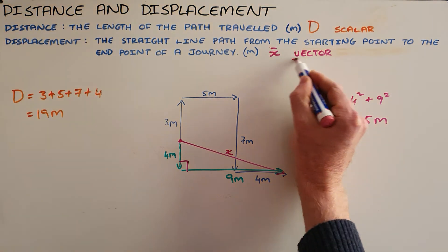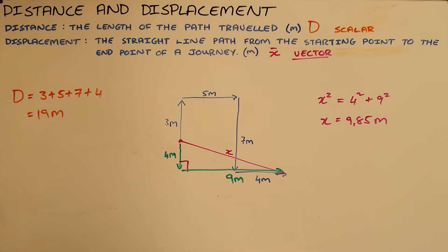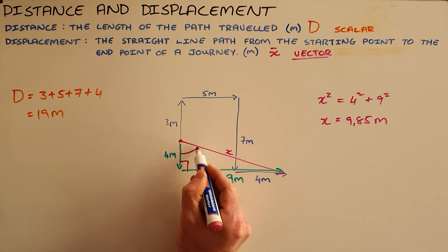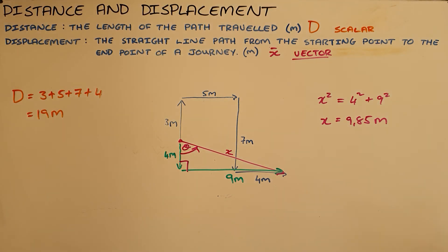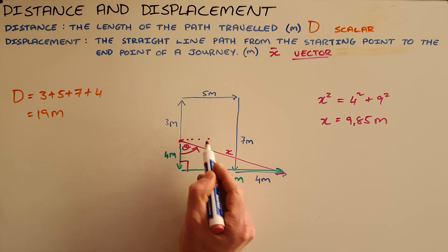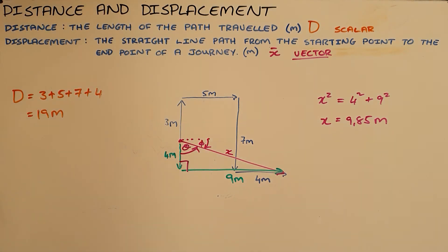Since displacement is a vector, it is important for us to define the direction. We would most commonly use trigonometry to define the direction in terms of some angle theta, measured either from the vertical or from the horizontal.